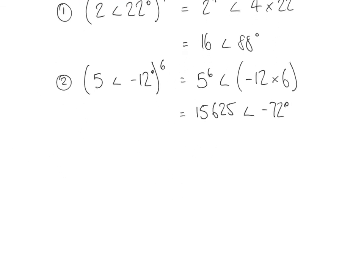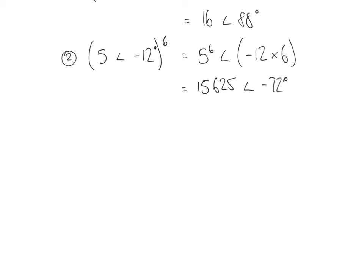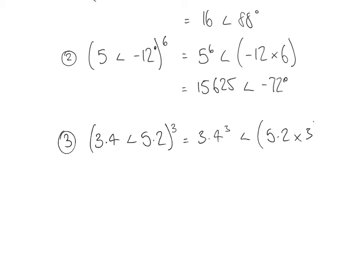Let's look at one more example using decimals. We have 3.4 at an angle of 5.2 degrees, raised to the power 3. The modulus is raised to the power 3, and the angle 5.2 is multiplied by 3. So 3.4 to the power 3 comes out as 39.304, at an angle of 3 times 5.2, which is 15.6 degrees.